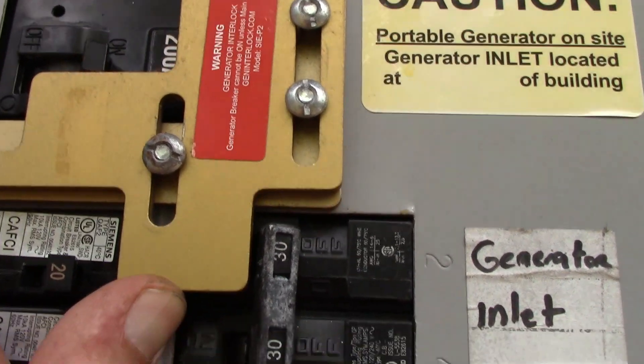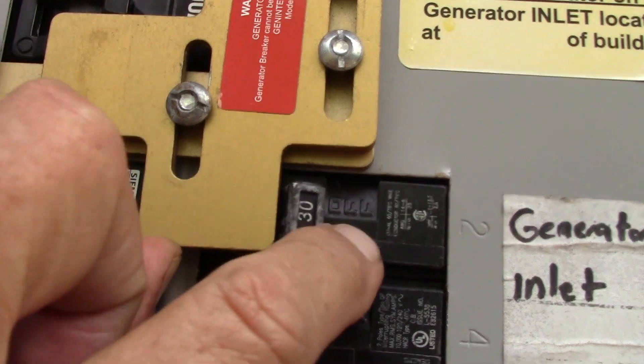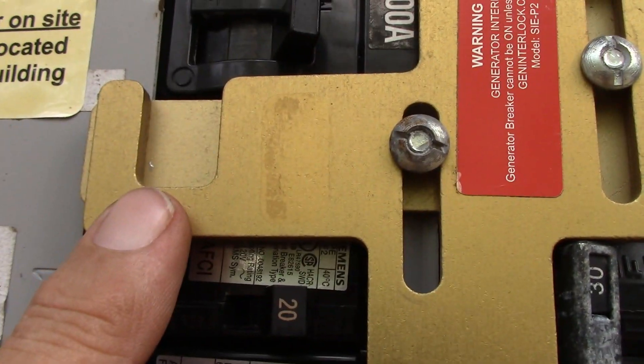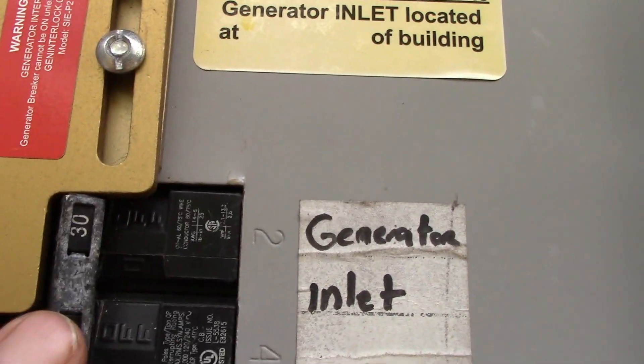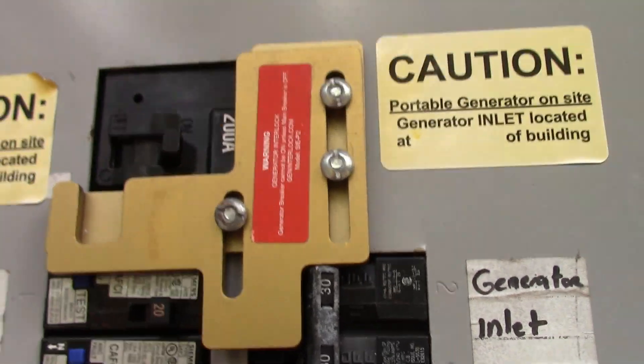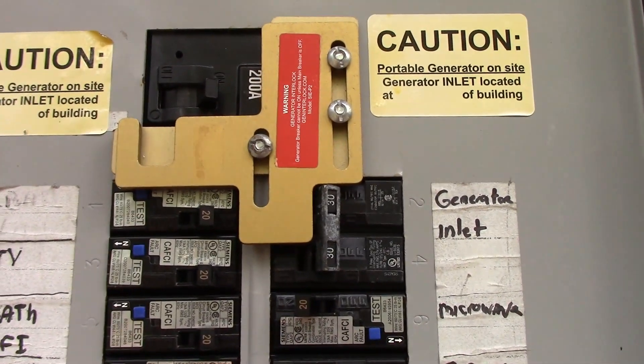As you see here, this won't lift up enough for me to turn this breaker on. What I would have to do is turn this off here - you see this little slot? Then this would come up far enough to turn this on. But then this is off, so the two can never be on at the same time. That is how I can connect my solar that way.